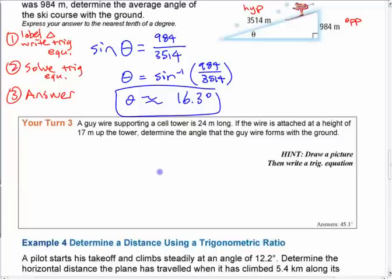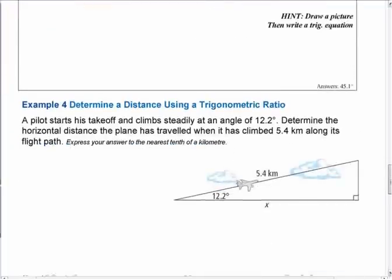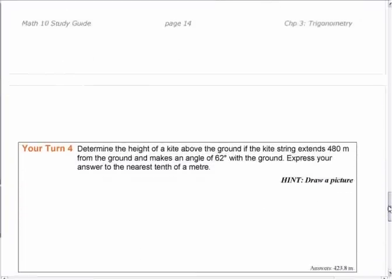At this point, I think you have enough background on writing trig ratios, solving it depending on where the variable is, and coming up with that answer that you probably should be able to work through this section mostly fairly independently.